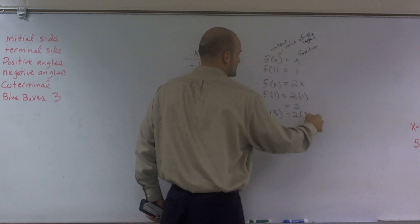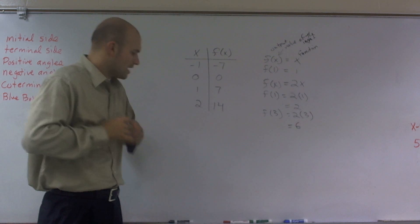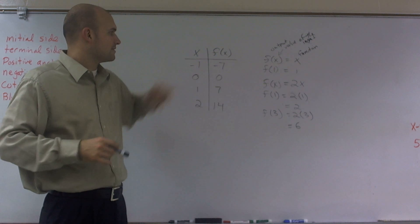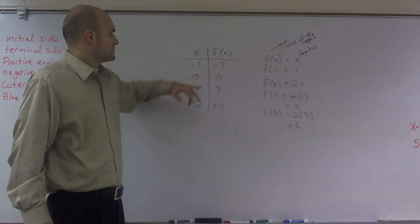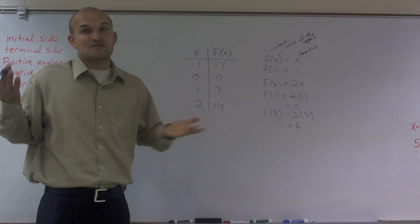So I need to say, well, can I multiply numbers to my x to get my f of x value of negative 7? Or to get my f of x value. So if I plug in a negative 1, what do I have to do to get a negative 7? We already ruled out you can't add and subtract. So what about multiplying?